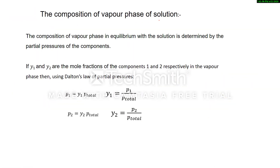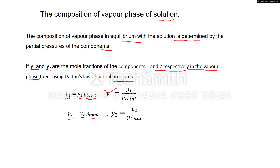Now, the composition of vapor phase in equilibrium with the solution is determined by the partial pressures of the components. If y1 and y2 are the mole fractions of components 1 and 2 in the vapor phase, and X1 and X2 are their mole fractions in the liquid state, then using Dalton's law: P1 = y1·P_total and P2 = y2·P_total. These two formulas are used to find out the composition in the vapor phase.